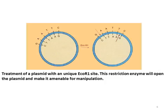In this video, we examine the recognition site of restriction enzymes. For example, ECO-R1 is a restriction enzyme extracted from E. coli. This restriction enzyme opens the plasmid at the recognition site, making it amenable for manipulation and preparing it for the linking of desired genes.